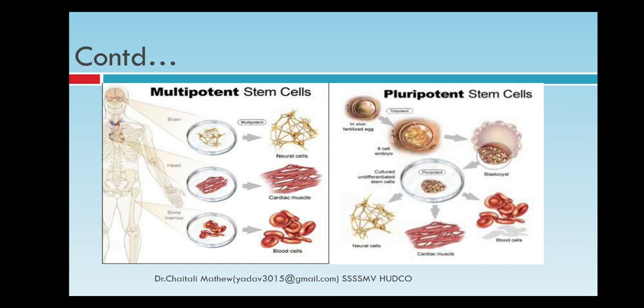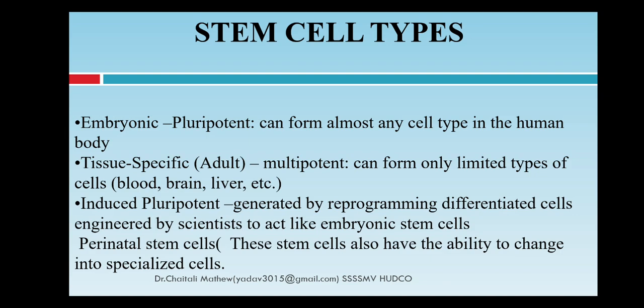Embryonic stem cells, or pluripotent stem cells, are those which can form almost any type of cell in the human body. Some stem cells are tissue-specific, like adult or multipotent cells; they can form only limited types of cells such as blood cells, skin cells, and liver cells. A third kind, very important, is induced pluripotent cells. These can be generated by reprogramming differentiated cells, engineered by scientists to act like embryonic stem cells — meaning they don't previously have that ability, but due to some modifications, they behave like embryonic stem cells.